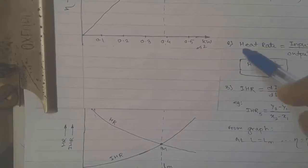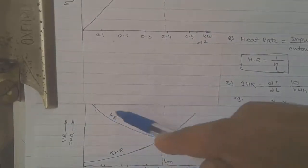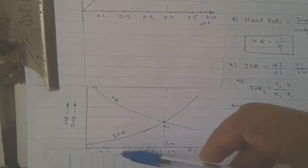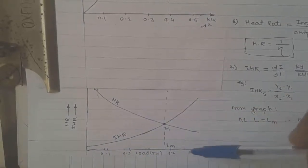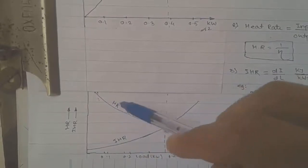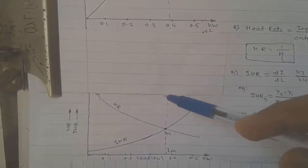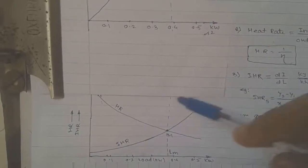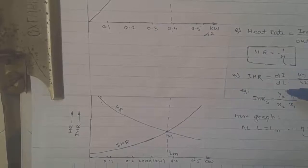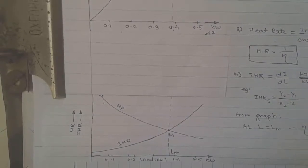IHR is calculated from the heat rate versus output graph. Consider the graph and look at the slope at different points — say at 0.1, 0.2, 0.3, 0.4, and 0.5. When we calculate the slope at these five points, that slope is the incremental heat rate: IHR = (Y2 − Y1) / (X2 − X1). We calculate IHR1, IHR2, IHR3, IHR4, and IHR5 at those five points, and then plot these same values against the output.